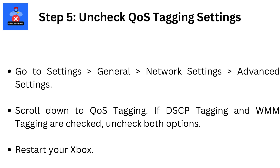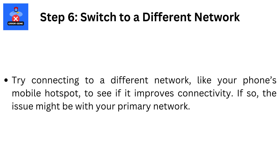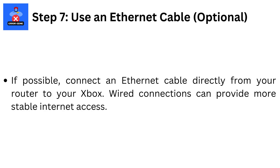Step 6: Switch to a different network. Try connecting to a different network, like your phone's mobile hotspot, to see if it improves connectivity. If so, the issue might be with your primary network. Step 7: Use an Ethernet cable (optional). If possible, connect an Ethernet cable directly from your router to your Xbox. Wired connections can provide more stable internet access.